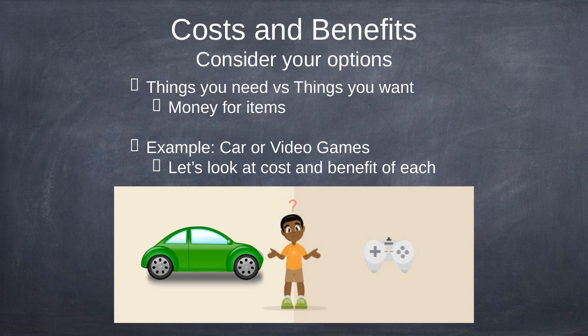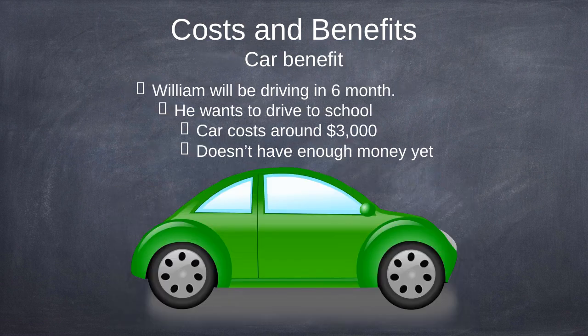So when you consider your options on cost and benefits — the things you need versus the things you want — this is coming up again. This is probably going to be on the test: needs and wants. You need to weigh your options. Look at the money example: a car or video games. We're going to look at the cost and benefit of each.